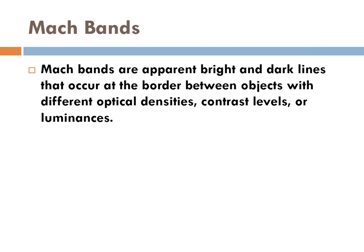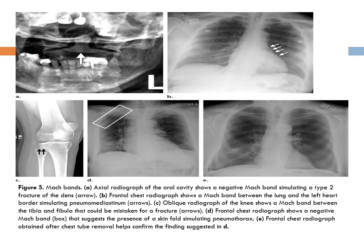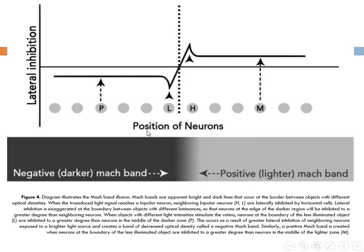Mach bands are apparent bright and dark lines that occur at the border between objects with different optical density, contrast level, or luminescence. They appear as bright and dark lines at boundaries. This process is formed by lateral inhibition — when one cell is stimulated, it inhibits nearby cells. At the boundaries the effect can be positive or negative, and lines will appear accordingly. So there are really no lines, but when one area is dark and another is bright and there is a transition, our brain tells us there is a band somewhere there.